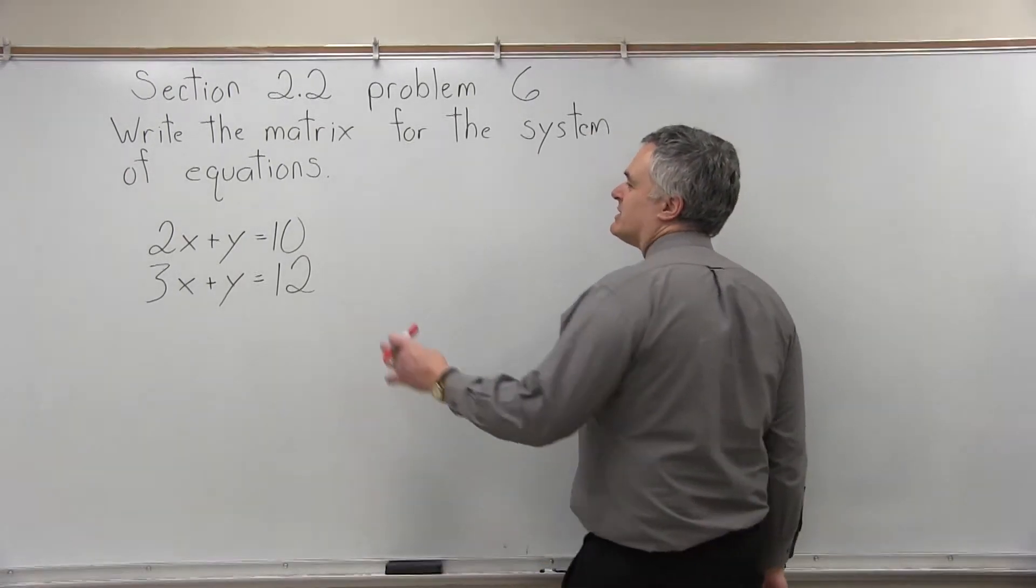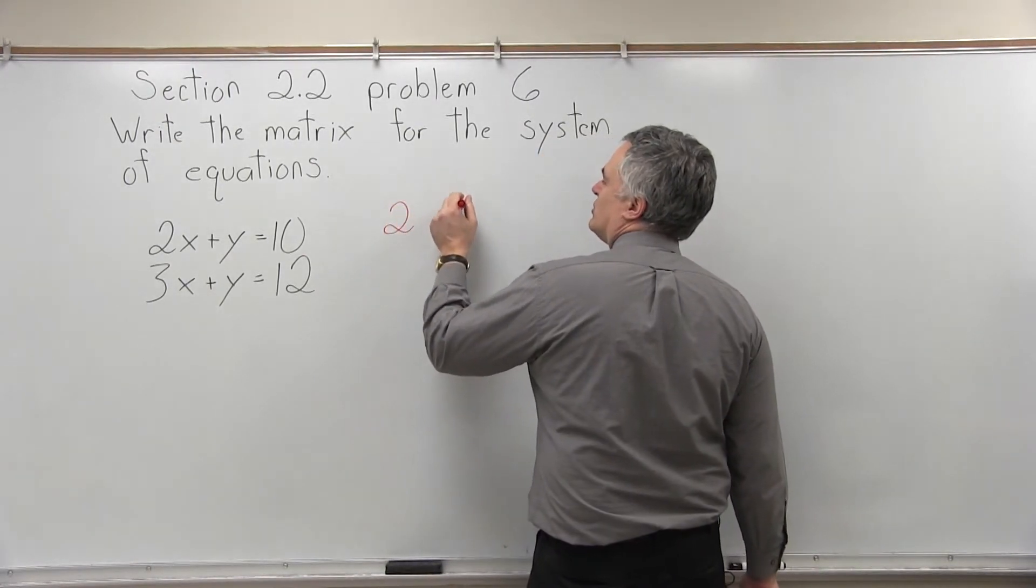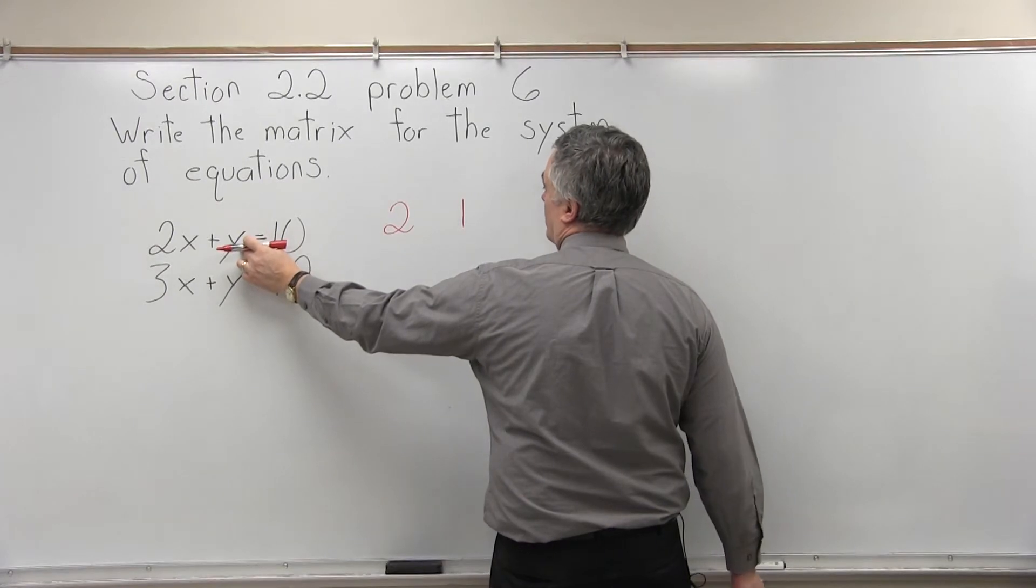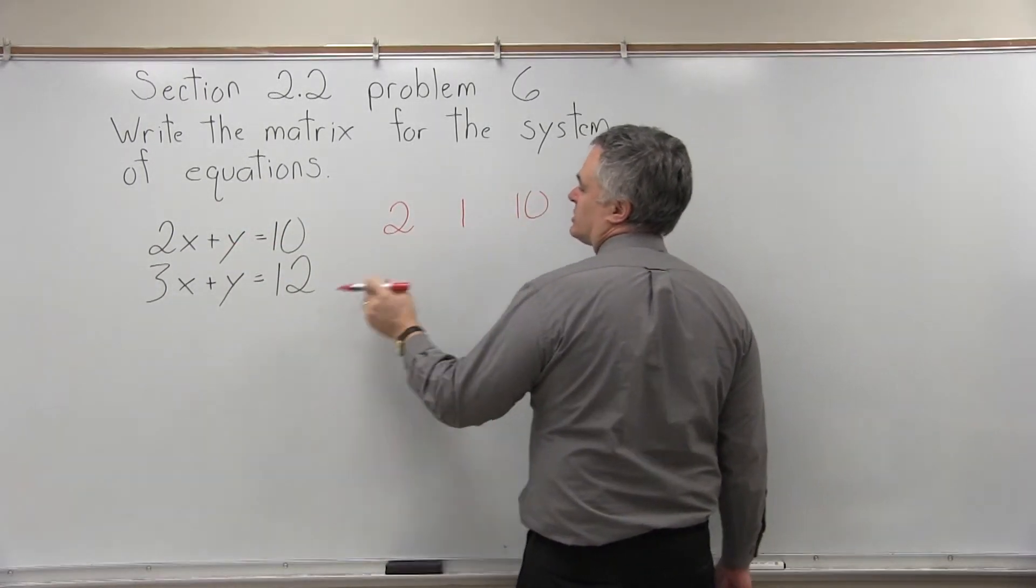So, as a matrix, that top equation would be the top row of the matrix. 2 for the 2x, 1 for the y. There's no 1 written, but you figure it's 1y, and then the 10 would be the last position.